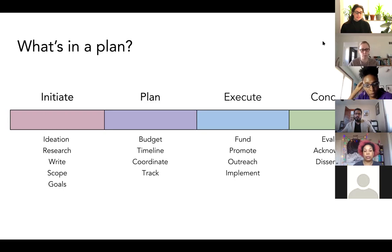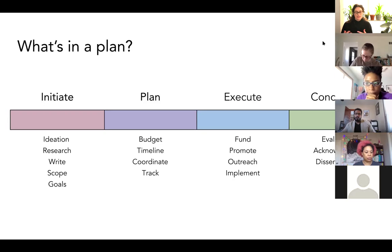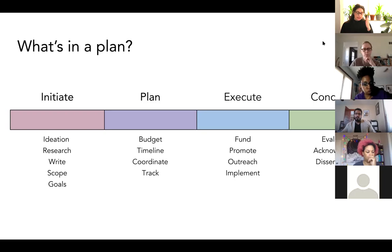Execution is really when you move things from being internal or for your team to more external into your community — when you start looking for funding, promoting, doing outreach, and implementing your project. And then lastly is the conclusion, where you evaluate, acknowledge, and disseminate about the project. This planning piece is probably as important as initiation, and it really sets you up for success in execution and conclusion.